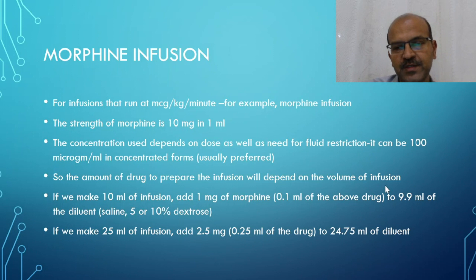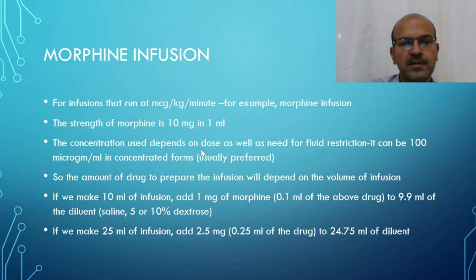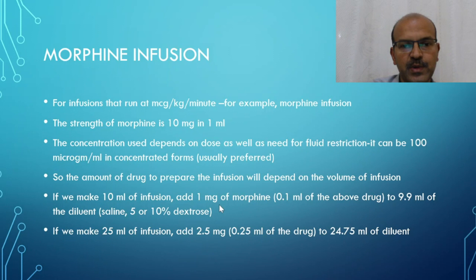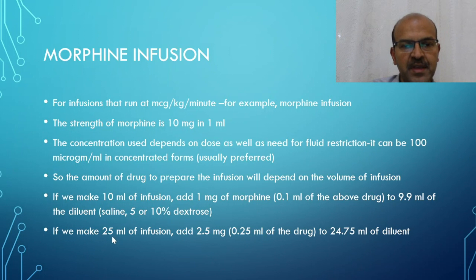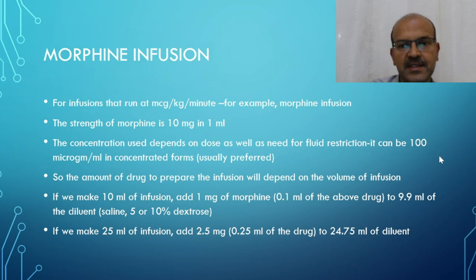The amount of drug we need to prepare depends on the volume. We prefer 25 ml of infusion most of the time. For 10 ml, we add 1 milligram of morphine, since the target strength is 100 microgram per ml — so 10 ml requires 1000 microgram, which equals 1 milligram. Because morphine is 10 mg/ml, we add 0.1 ml of the drug to 9.9 ml of diluent such as saline or dextrose. For a 25 ml infusion, we add 2.5 milligram to 24.75 ml.